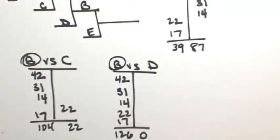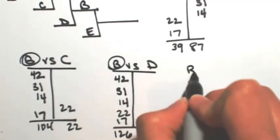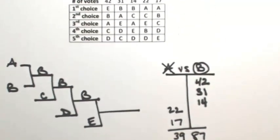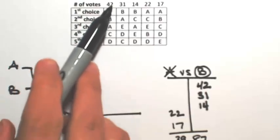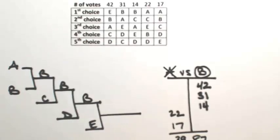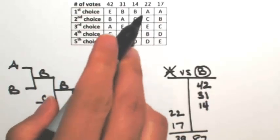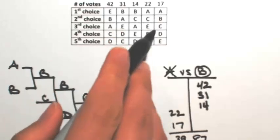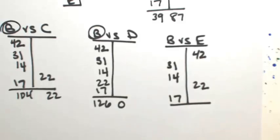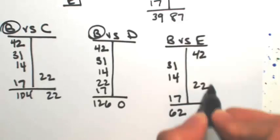Okay, so one final competition. Whoever wins this one is our winner. B versus E. In the first column, E is over B, so E gets 42. B over E, so B gets 31. B over E, 14. E over B, so E gets 22. B over E, so B gets 17. This one looks pretty close. 31 and 14 and 17 gives me 62. 42 and 22 give me 64. So E wins.